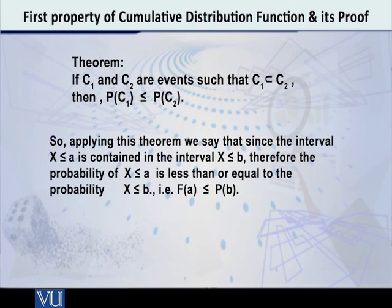Now if this is the fact, then we can use a theorem that we already know, a well-established theorem: that if C1 and C2 are two events such that C1 is a subset of C2, then the probability of C1 is less than or equal to the probability of C2. This theorem is well known.